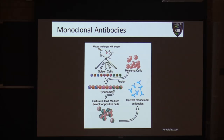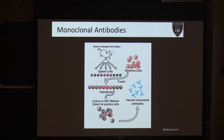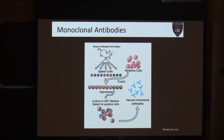After the immune response, we remove all the B cells from the spleen and mix them with myeloma cells. When these two cell populations are mixed, some will fuse — a myeloma cell fuses with a B cell — and this immortalizes that cell so it can divide many more times than the original B cell. There's a selection marker we can put in the media to select strictly for these fusions, and now we have hybridomas.